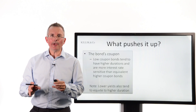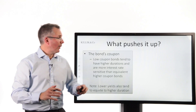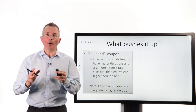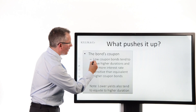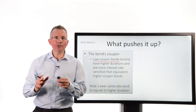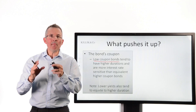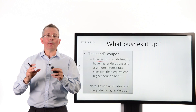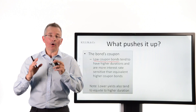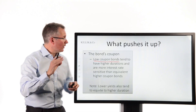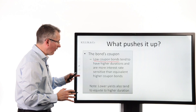What moves duration? What would move you from five to six to seven? The bond's coupons are an important factor. Low coupon bonds tend to have higher durations, making them more interest rate sensitive. The impact of, say, a half percent change on something generating only 2% in total is greater than a half percent change on something generating 10%. So low coupon bonds tend to be more sensitive to a change in interest rate than ones that carry a higher coupon rate.